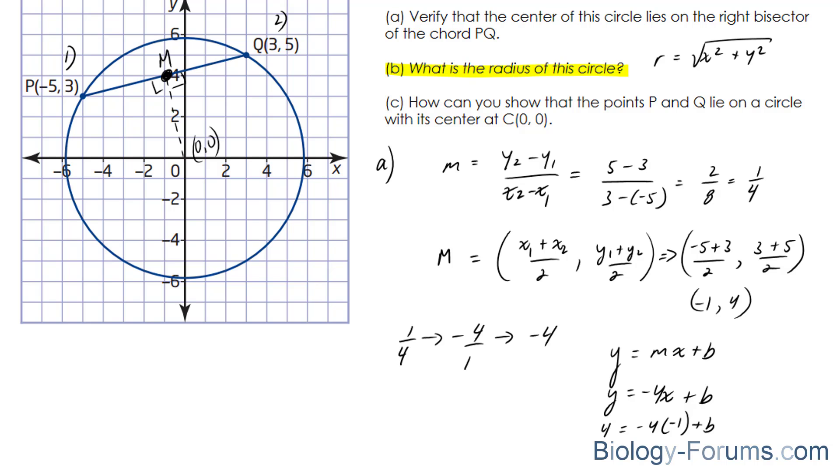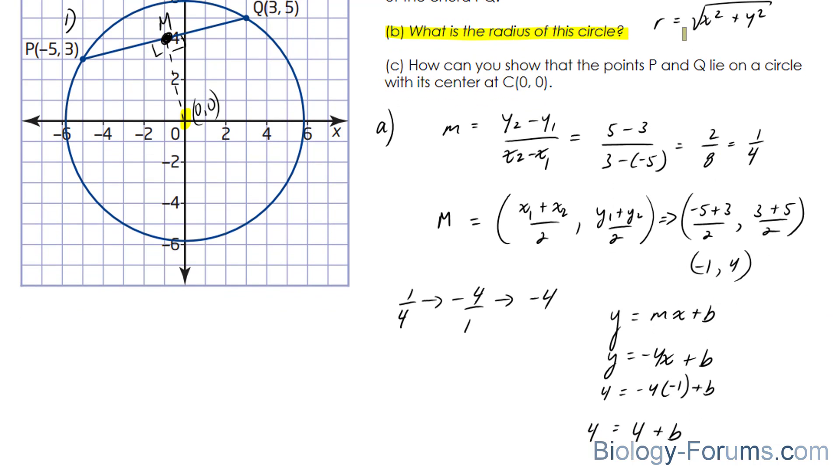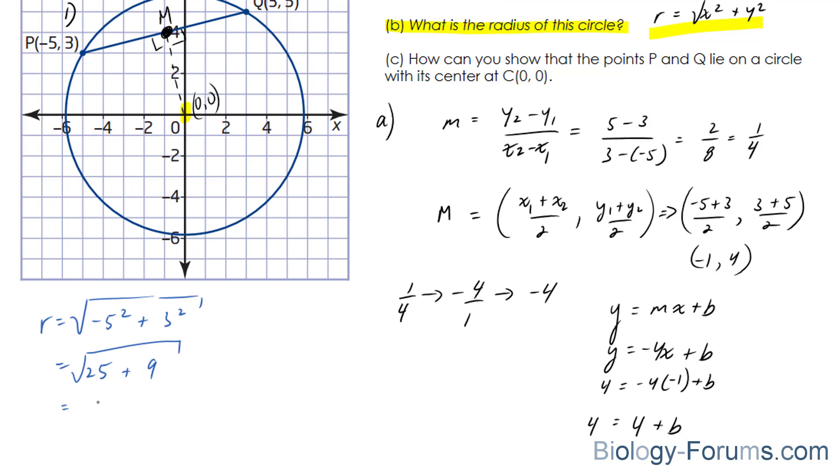Now, since we just verified that the center is at 0 and 0, we can use the formula that I stated earlier. r is equal to square root of x squared plus y squared. Now, we can use either P or Q, the coordinates, to substitute it in. I'm going to use this one. Negative 5 squared plus 3 squared. And the whole thing is square rooted. We end up with 25 plus 9 and the square root of that is square root of 34.